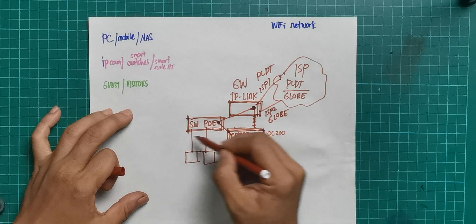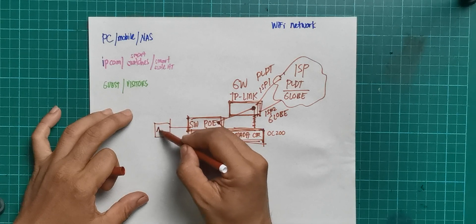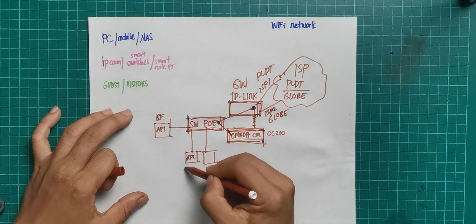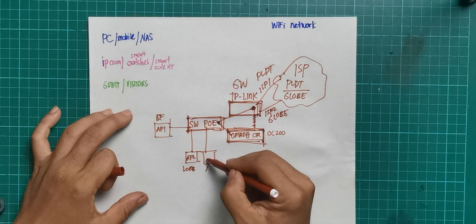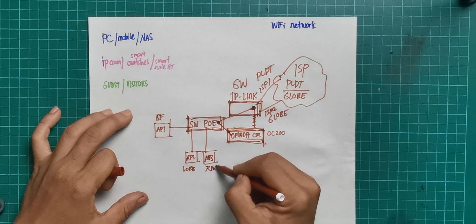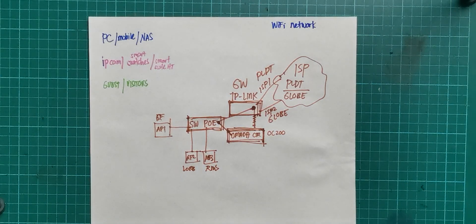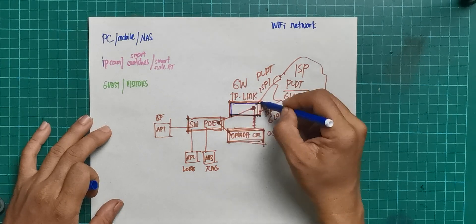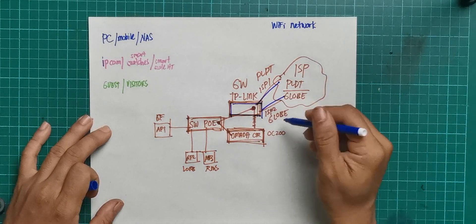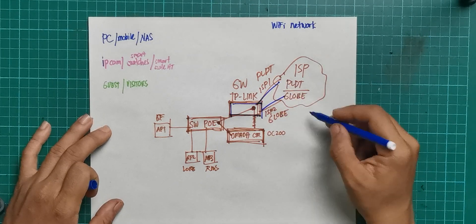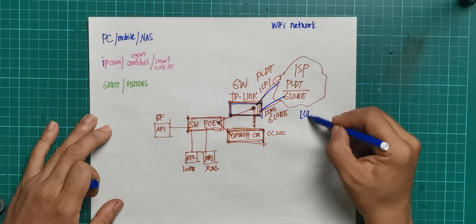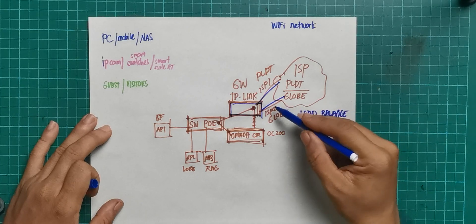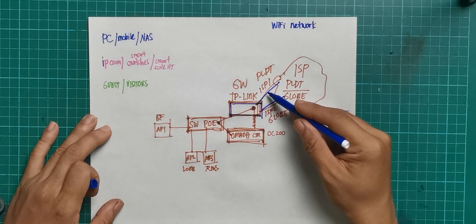The PoE switch supplies my access points: AP1 on the ground floor, AP2 in the lobby, and AP3 in the rooms. That's how I deploy my home network. The gateway has two ISP connections — PLDT and Globe.